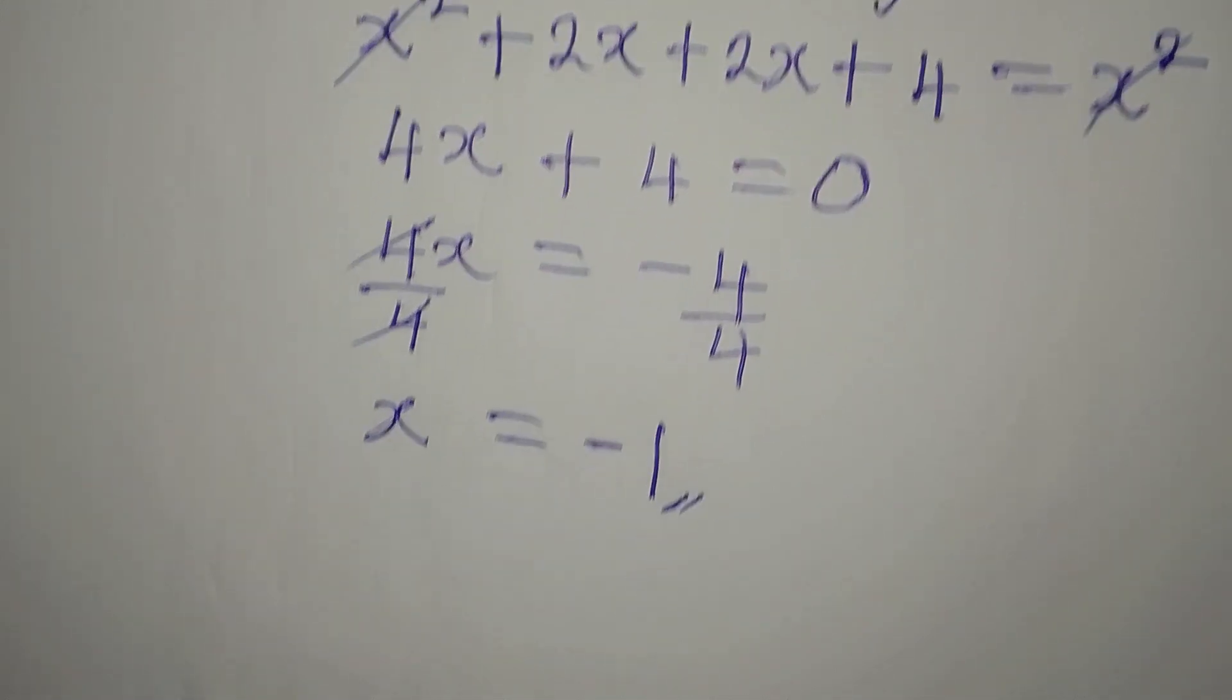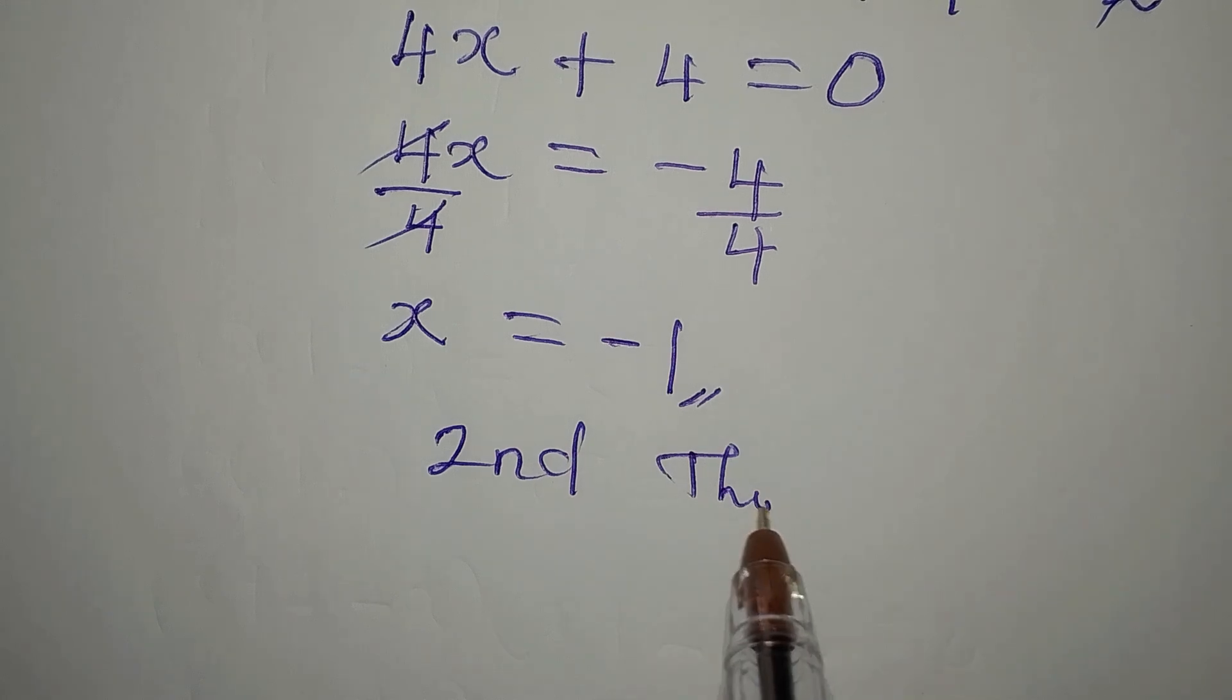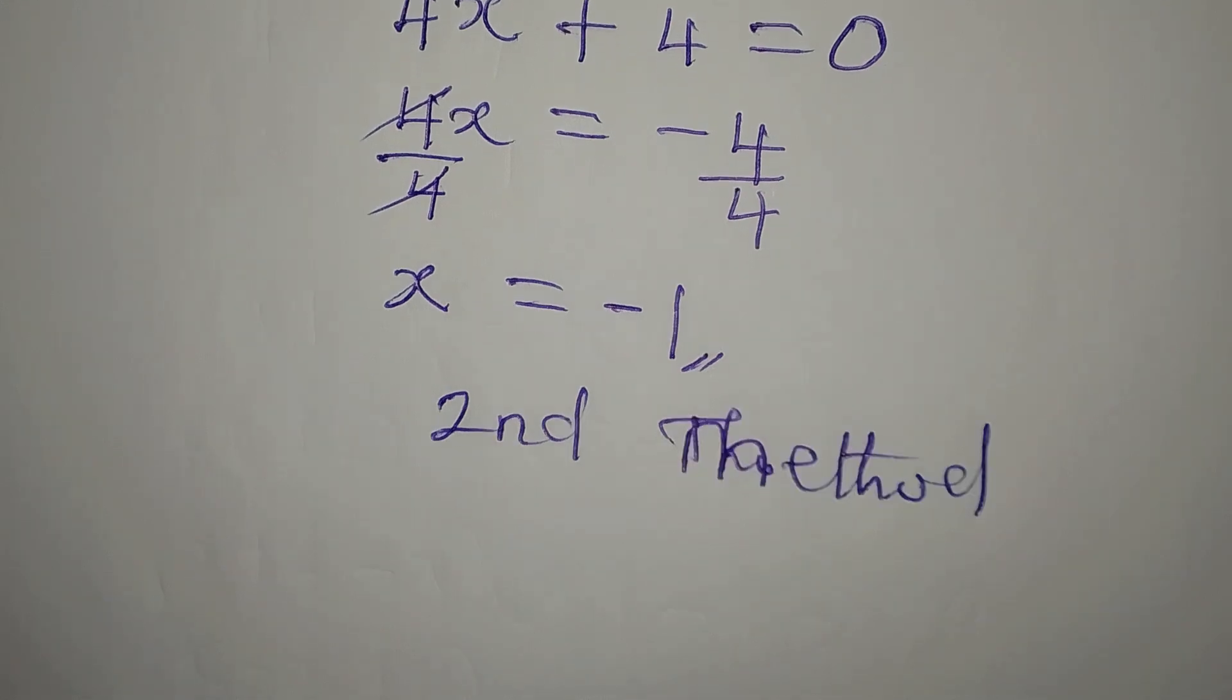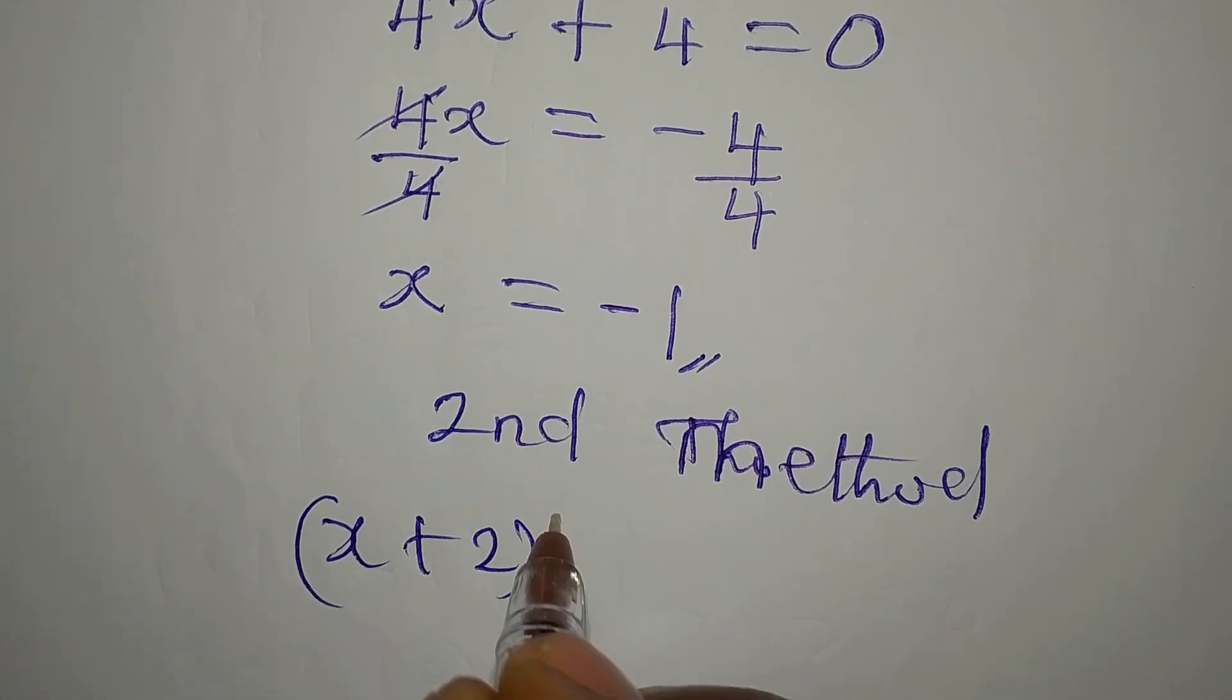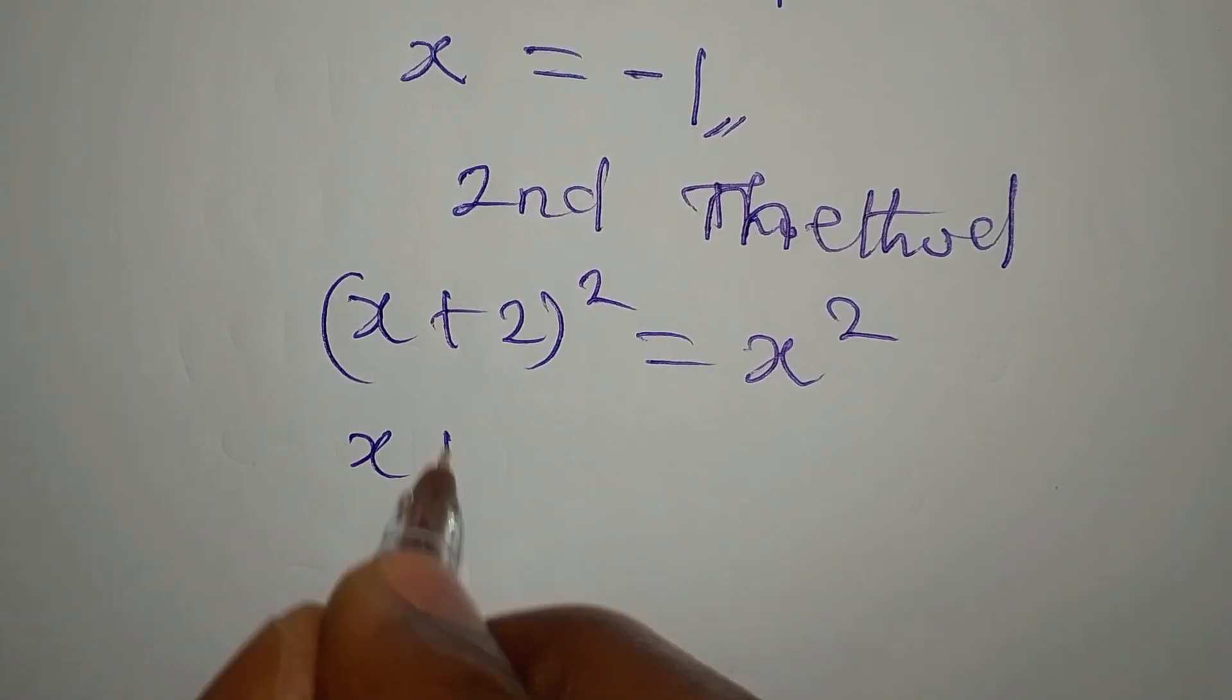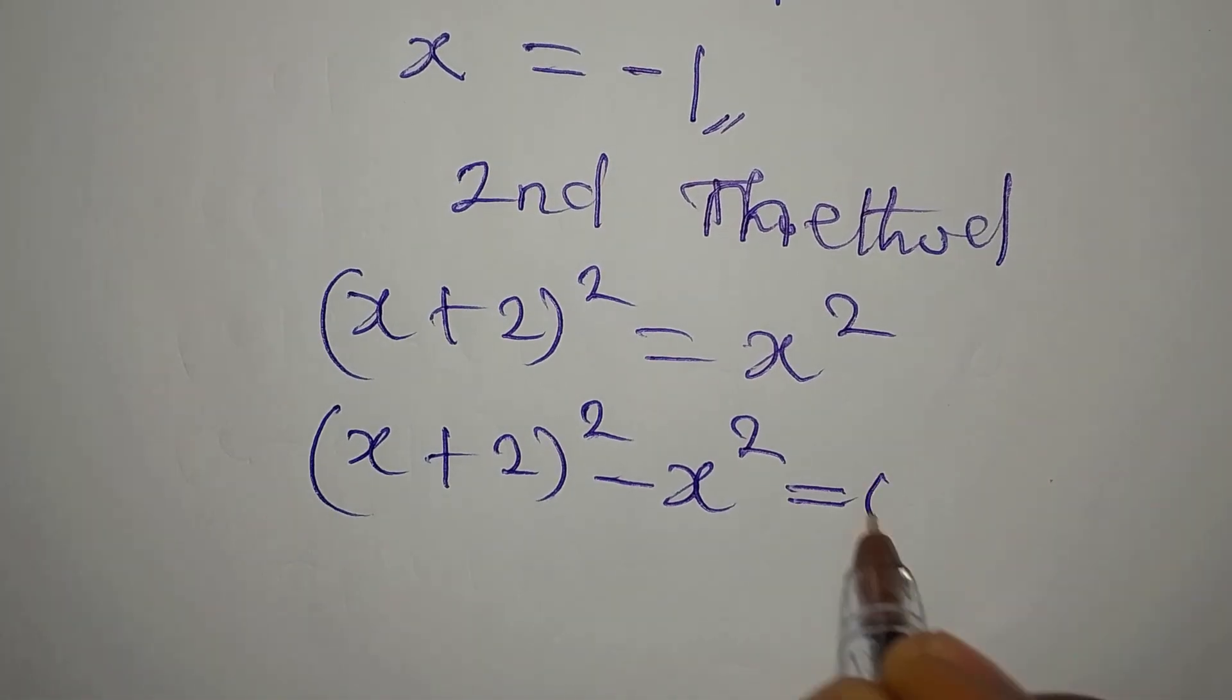The next thing we will do is the second method. Let's go through the second method. For the second method, we still have x plus 2 to the power of 2 which is equal to x to the power of 2. This is x plus 2 to the power of 2 minus x to the power of 2 equals 0.